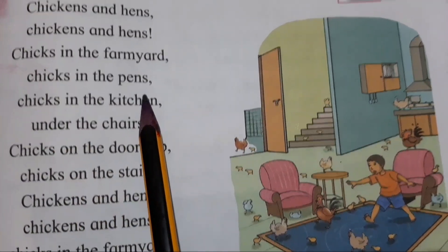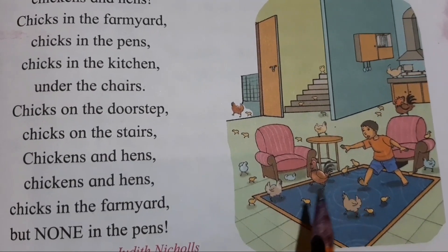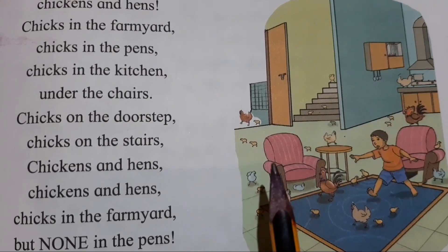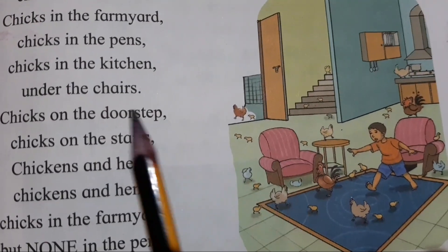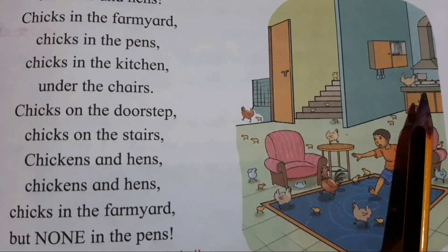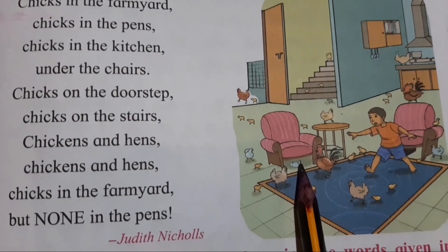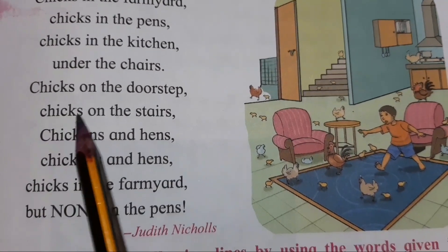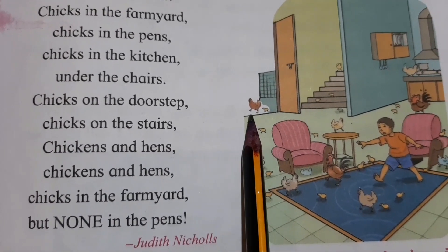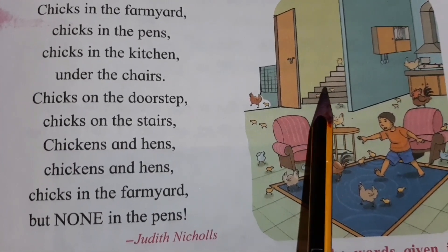Chicks in the pens — pen means jahaan pe murgiyon ko rakha jata hai, wo hissa. I will show you the picture. Chicks in the kitchen — see, they are in the kitchen also. Under the chair — chair ke neeche. Chicks on the doorstep — darwaze ke step ke upar, darwaze ke bahar bhi hai. Chicks on the stairs — wo stairs pe bhi hai.